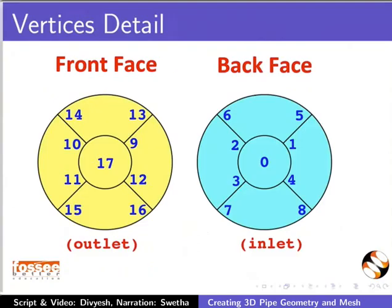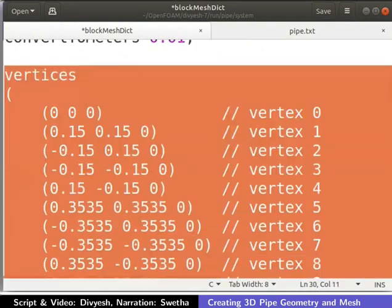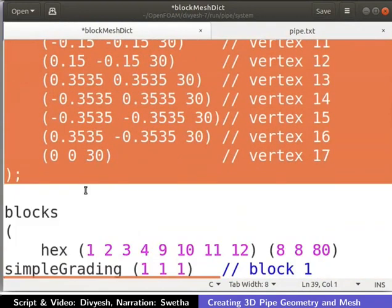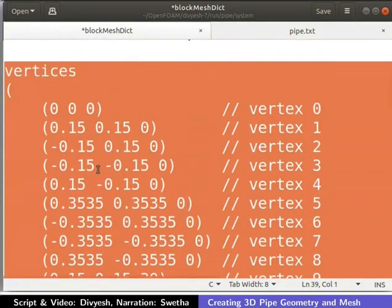Vertices are shown in the slide. Here, we are going to use 18 vertices to define the geometry of a pipe. For example, two reference points 0 and 17 are on (0 0 0) and (0 0 30) respectively. All 18 points are defined in the vertices section in the blockMeshDict file as shown.